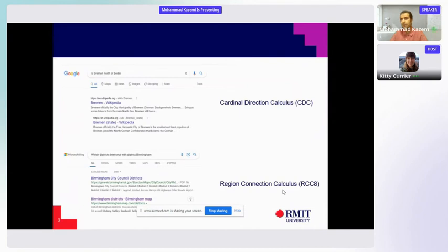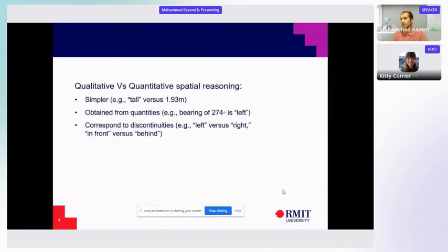Here are two examples of qualitative geospatial questions for two different types on Google and Microsoft Bing, and as it shows, they failed to answer these questions correctly. So this is the first motivation of conducting this research by focusing on qualitative spatial reasoning.